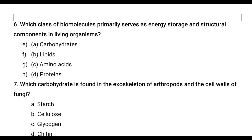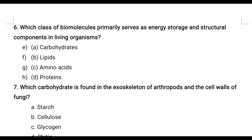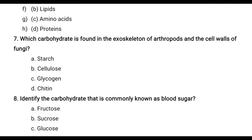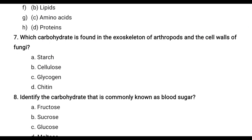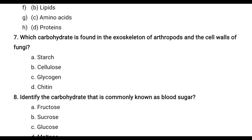Sixth question: Which class of biomolecules primarily serves as energy storage and structural components in living organisms? The correct answer is carbohydrates. Seventh question: Which carbohydrate is found in the exoskeleton of arthropods and cell walls of fungi? Options are starch, cellulose, glycogen, chitin — the correct answer is chitin.